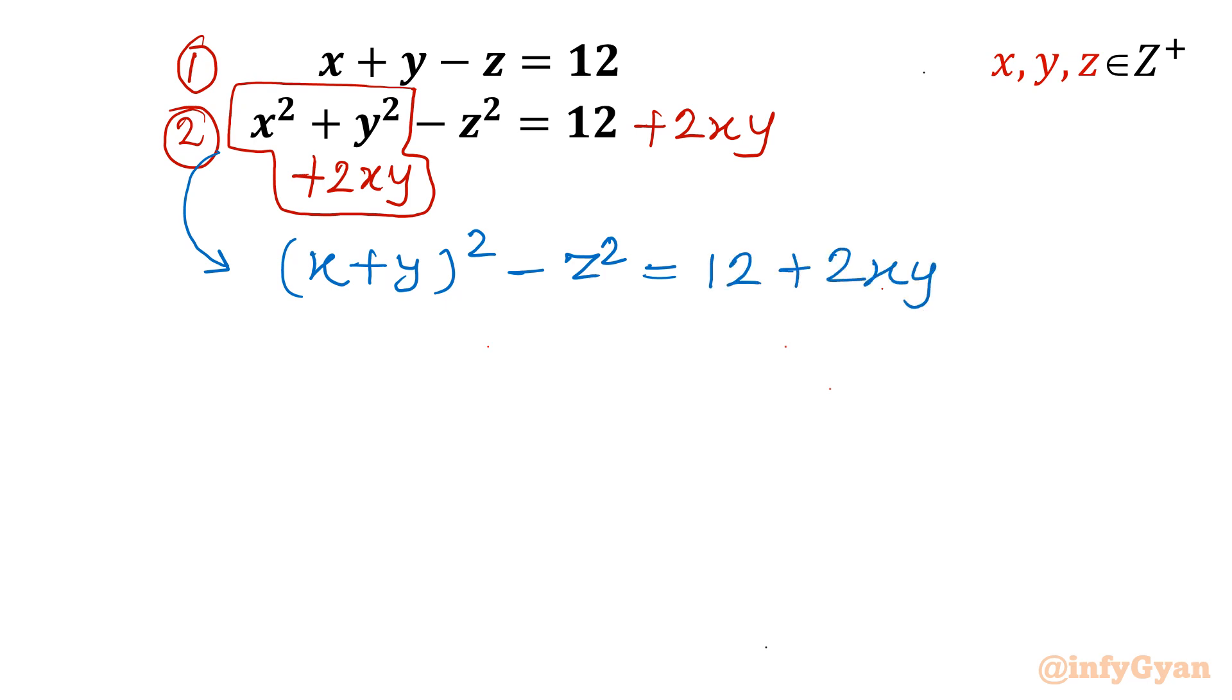Now a squared minus b squared, difference of two squares formula is on, I will apply. I will write x plus y plus z in second bracket. In second bracket I will write x plus y minus z. Right hand side would be 12 plus 2xy.